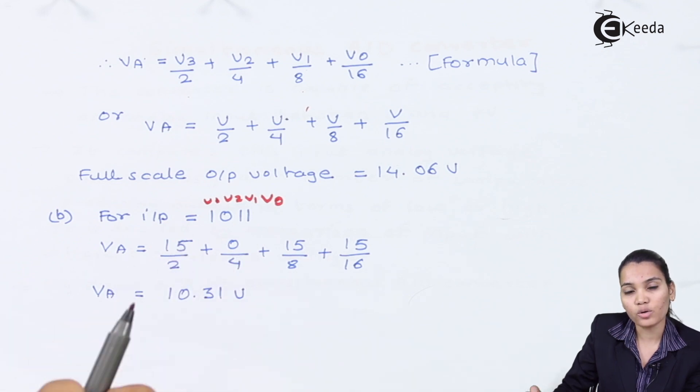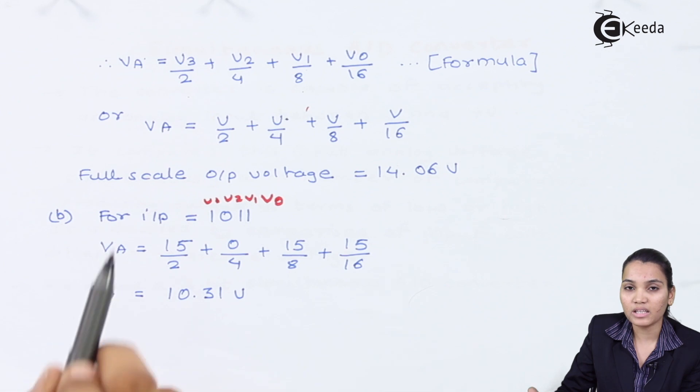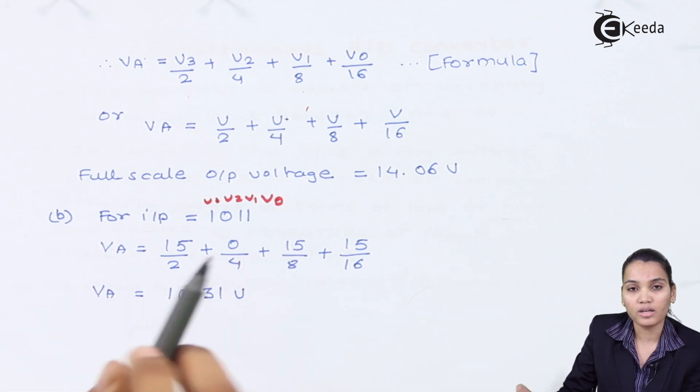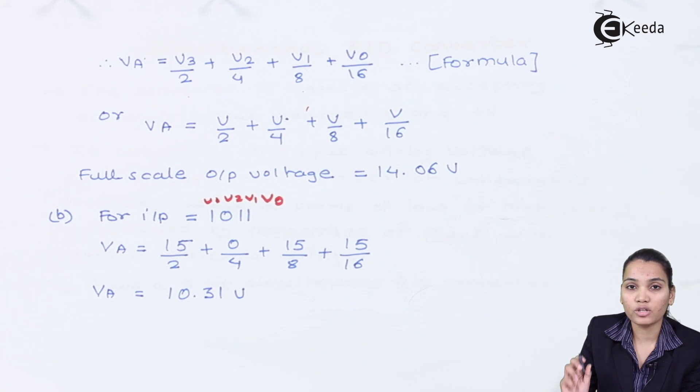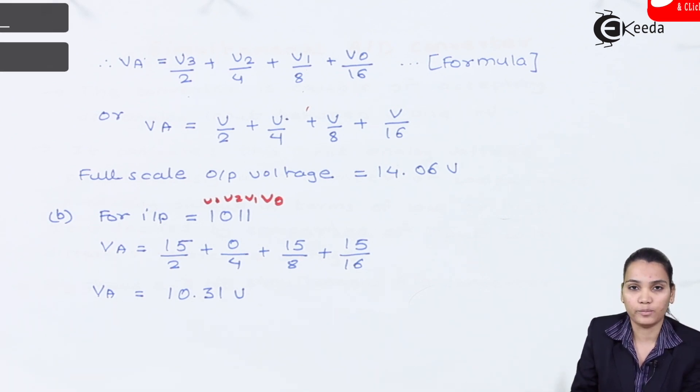So in these problems of the R2R ladder network, the two important and basic formulas are finding the output of the R2R ladder network by applying different kinds of input. So always consider the value of logic 1 and 0. The value of logic 1 and 0 will always be given in the question itself. So you just have to substitute the value of 0 and 1 and then you can calculate the analog output voltage by applying different cases of digital input voltage.